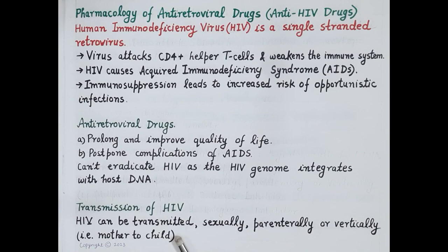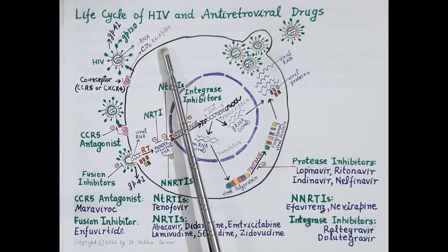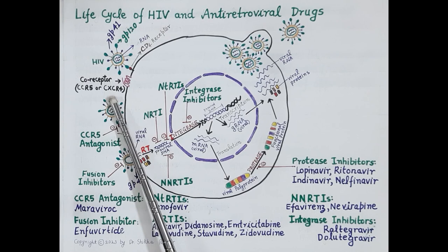In order to understand the pharmacology of antiretroviral drugs, let's study the life cycle of HIV. This chart explains the life cycle of HIV. This cell is a CD4-positive immune cell. These are the red-colored CD4 receptors, and these are the chemokine co-receptors CCR5 or CXCR4. Any one of these co-receptors is essential for HIV to enter the host cell.